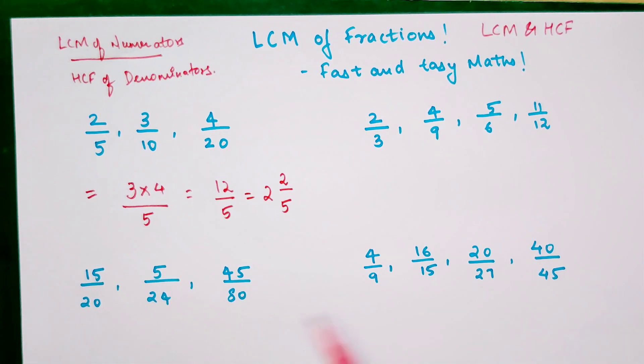Now over here we have 15, 5, and 45. So looking at the LCM, it is very simple. Here you look at the bigger number. Is 45 coming in 5's table? Yes. Is 45 coming in 15's table? Yes, because 15 into 3 gets you 45. So your numerator will be just 45.